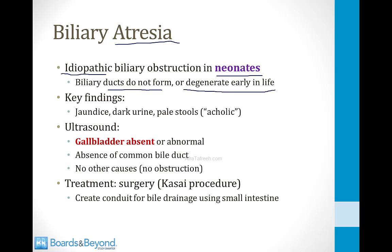As a result, these babies do not have a conduit to transmit bile from the liver into the intestines, and they present with symptoms of obstruction of biliary flow. Those symptoms include jaundice, dark urine, and pale-colored stools, which are called acholic stools.